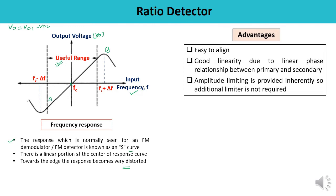There are certain advantages of the ratio detector. It is very easy to align, which is a major advantage. Good linearity is obtained in comparison to other detectors, because of the linear phase relationship between the primary and secondary. Amplitude limiting is provided inherently in the ratio detector, so no additional limiter is required. Ratio detectors are used in TV receiver sound sections and in narrow-band FM receivers.